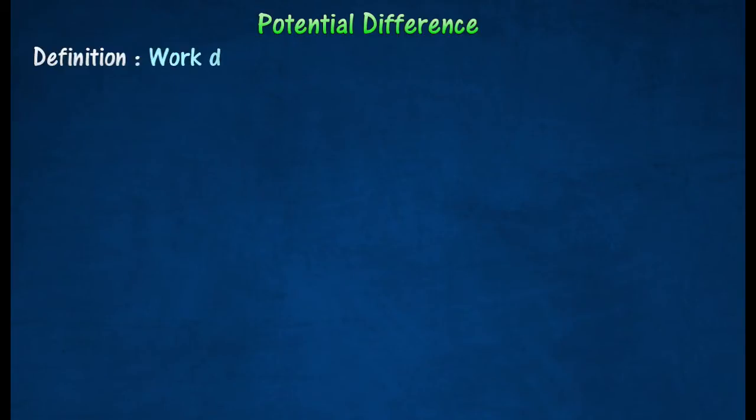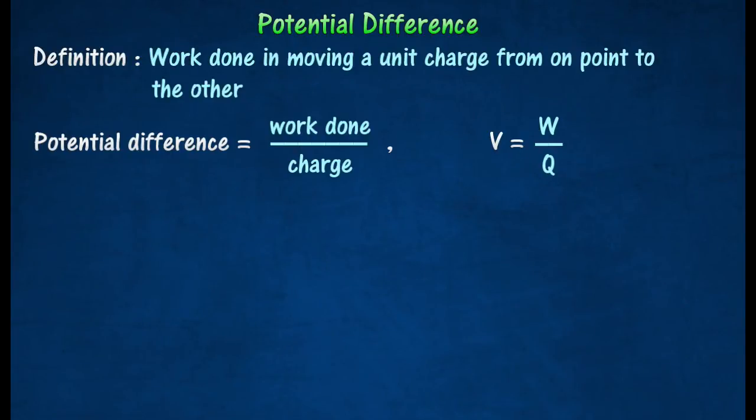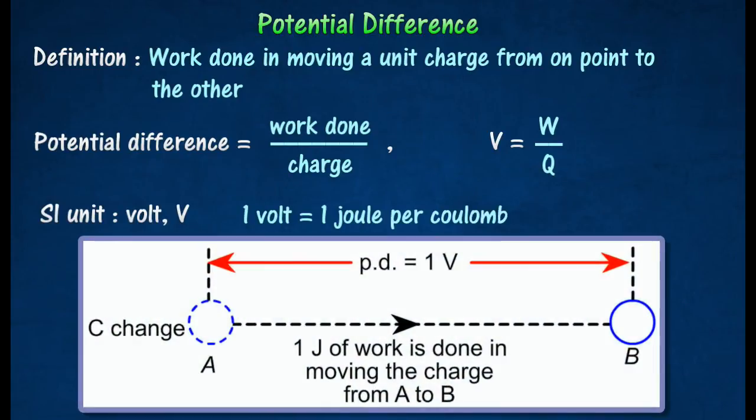The potential difference across two points in an electric circuit is defined as the work done in moving a unit charge from one point to the other. Mathematically, potential difference can be written as shown. Potential difference is measured in volts.